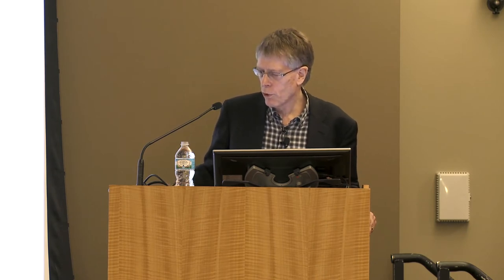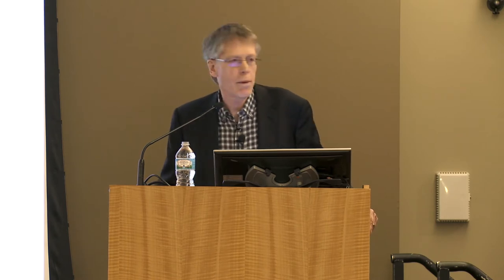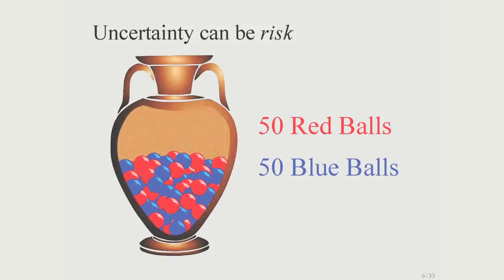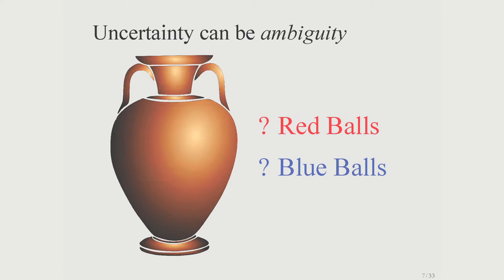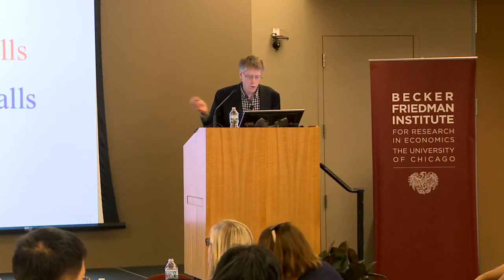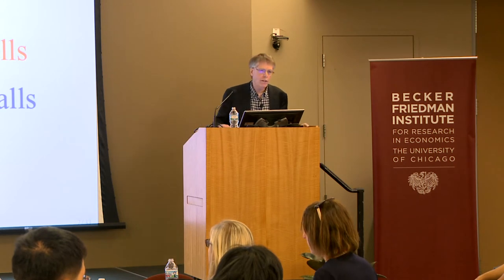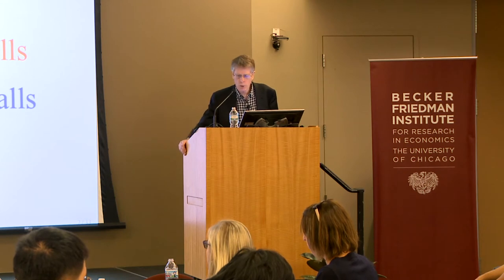Let me draw distinctions between different types of uncertainty. The first is risk: we know probabilities but not outcomes. Here's an urn — half the balls are red, half are blue. We draw randomly; the probabilities are 50-50. In economic models, we typically presume people know probabilities but not outcomes — that is risk. I'll also introduce ambiguity: an unknown number of red and blue balls in the urn that you have to figure out through drawing. As you get more evidence, you get a better idea of the fractions. So we're learning through data.